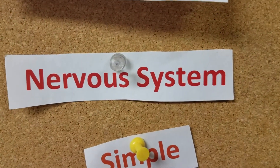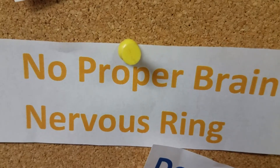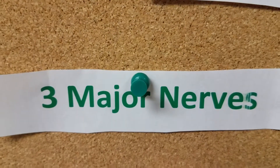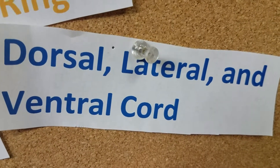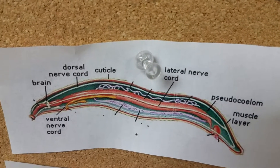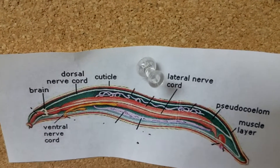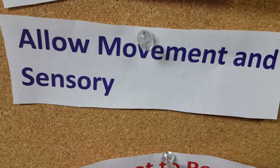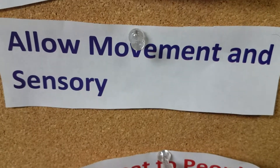The last system is going to be the nervous system. The human roundworm's nervous system is very simple, having no proper brain. The center of the system is called the nervous ring, because this is where all the muscles connect up, and there are three major nerves which connect at the nervous ring: the dorsal, lateral, and ventral cords. Here on the diagram you can see the nervous ring, and connected at the top is the dorsal nerve cord, in the middle is the lateral nerve cord, and the ventral nerve cord is at the bottom. These allow for movement and sensory function of the worm, so they allow the worm to sense things around it.